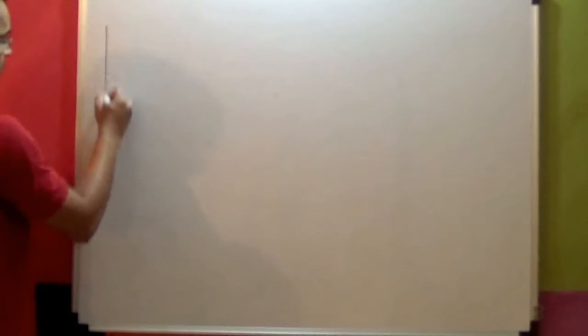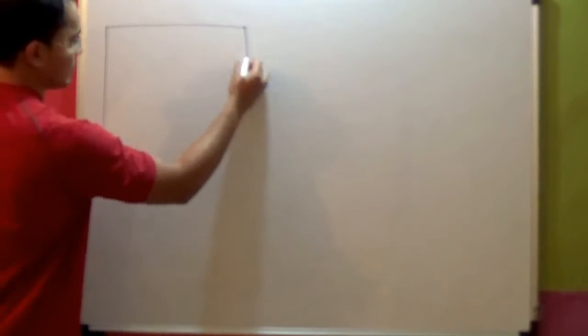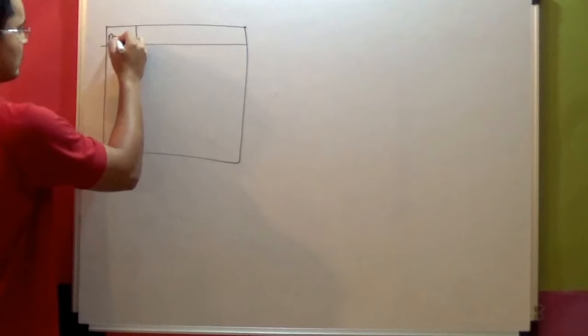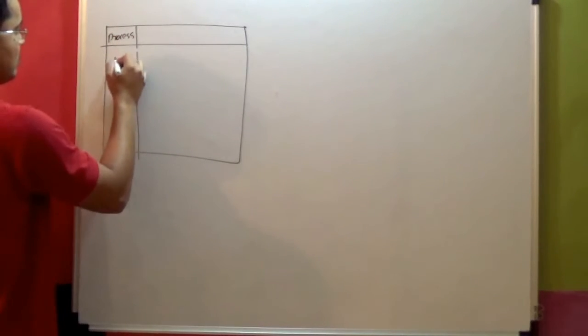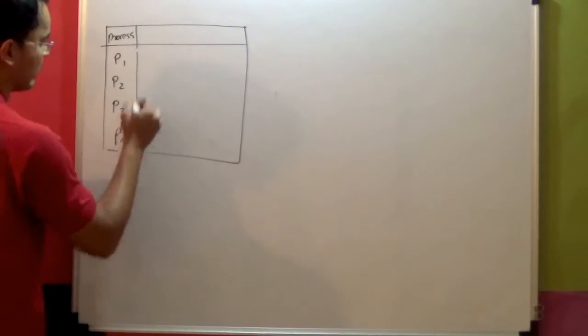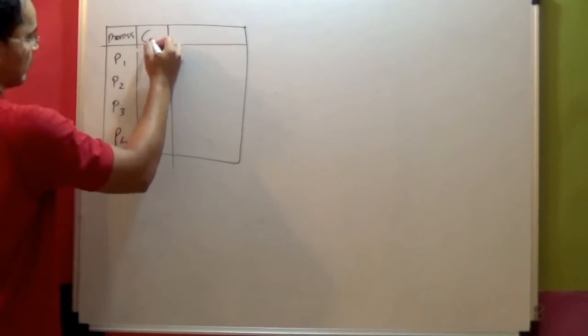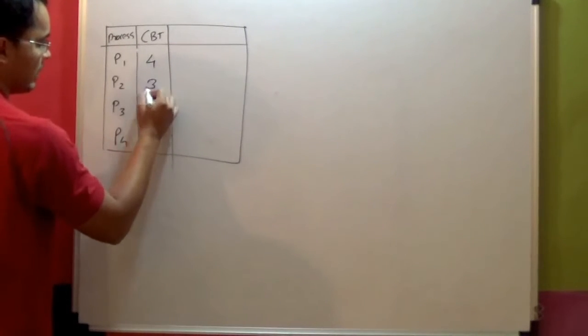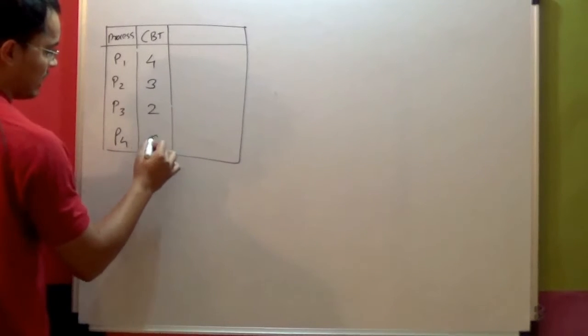So let's have a table for 4 processes: P1, P2, P3, P4. Then what is given? Burst time - how much? 4, 3, 2, 8. Then arrival time - how much? 2, 1, 0, 3.